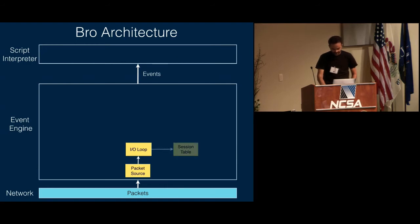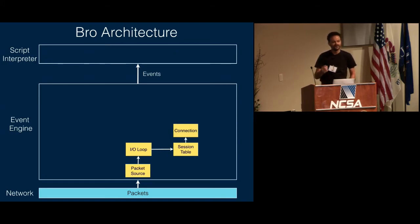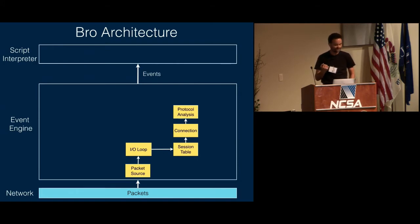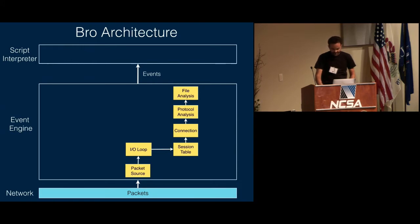For packets, the first thing that happens is a lookup into the session table to see if you already know the connection this packet is part of. If it's the first time we see a packet for this connection, we instantiate a new connection instance. The connection class then takes charge of all subsequent packets belonging to the same connection, and all further processing happens within this container with state maintained per connection. Once we have a connection, protocol parsing starts, where Bro has a bunch of protocol analyzers that dig into the payload. After protocol analysis, some protocols transfer files, so there's a similar pipeline for file analysis.